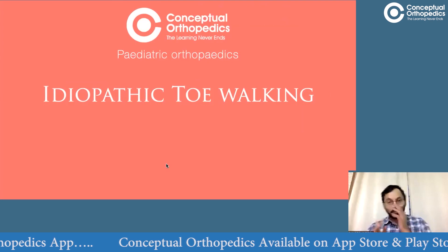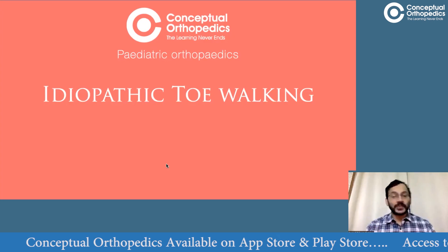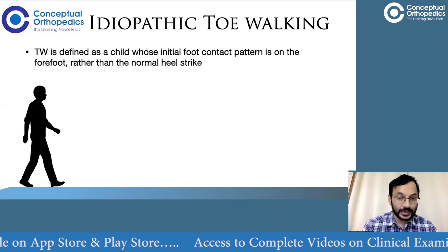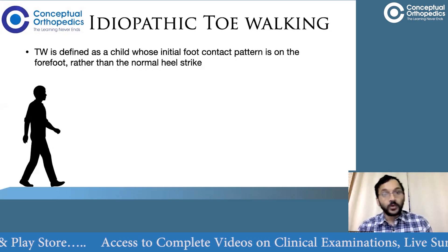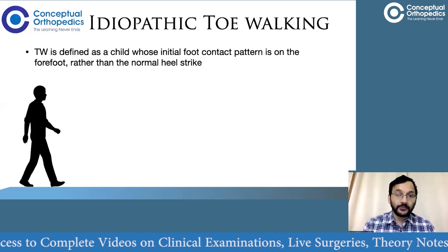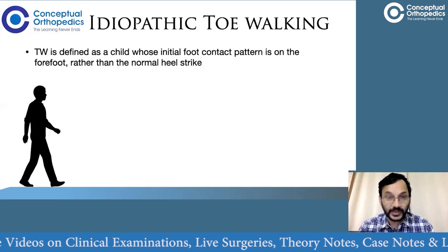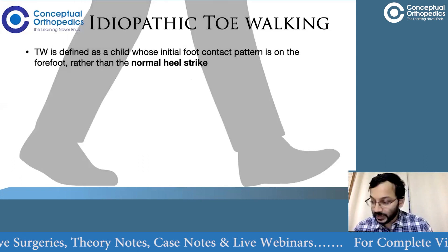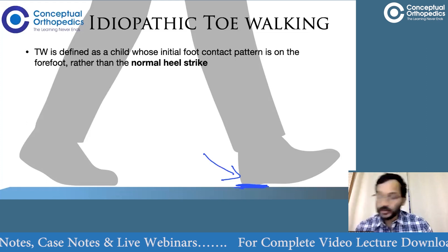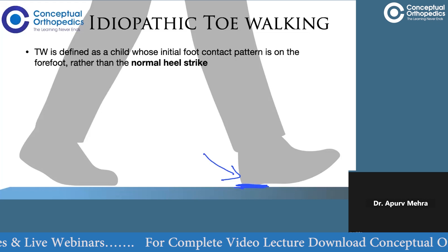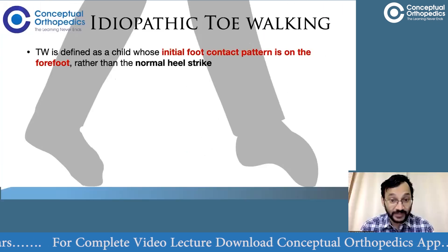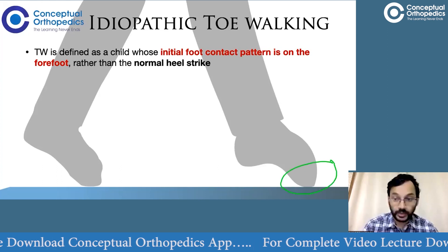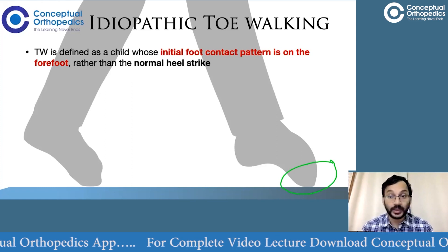So what exactly is toe walking? In gait, we have a stance phase as well as a swing phase. During the stance phase, the first thing that meets the ground is the heel — we call that the heel strike. Toe walking is defined as a condition where the initial foot contact pattern in the stance phase is on the forefoot rather than the normal heel strike. So there is no heel strike as such.